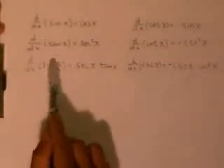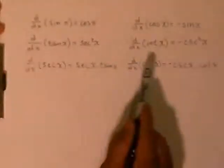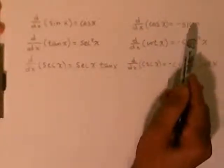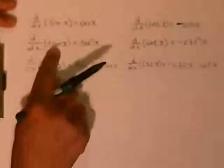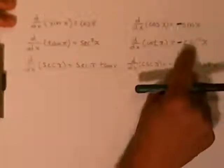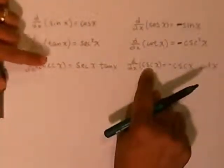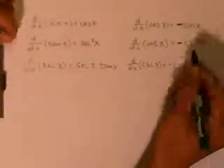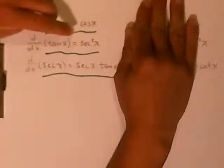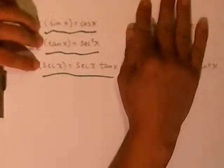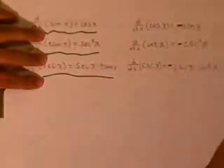Before we get started, you already know some of these — they're pretty simple. The derivative of sine is cosine. The derivative of cosine is negative sine — they're co-functions, so notice the negative. The derivative of tangent is secant squared. The derivative of cotangent is negative cosecant squared — the co-function. The derivative of secant is secant tangent. The derivative of cosecant, which is the co-function, is negative cosecant cotangent. If you memorize these three, the rest comes from the co-function pattern.